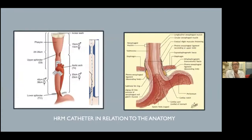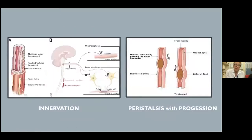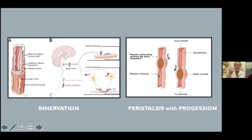Once the catheter is introduced, it sits in the stomach and you can see the aortic arch as a prominent pressure artifact on the tracing. You can also clearly see the diaphragm and the internal lower esophageal sphincter. You have excitatory and inhibitory stimuli. It's important to realize that peristalsis must be progressive to be normal — the bolus moves because of contraction behind it and relaxation in front of it.